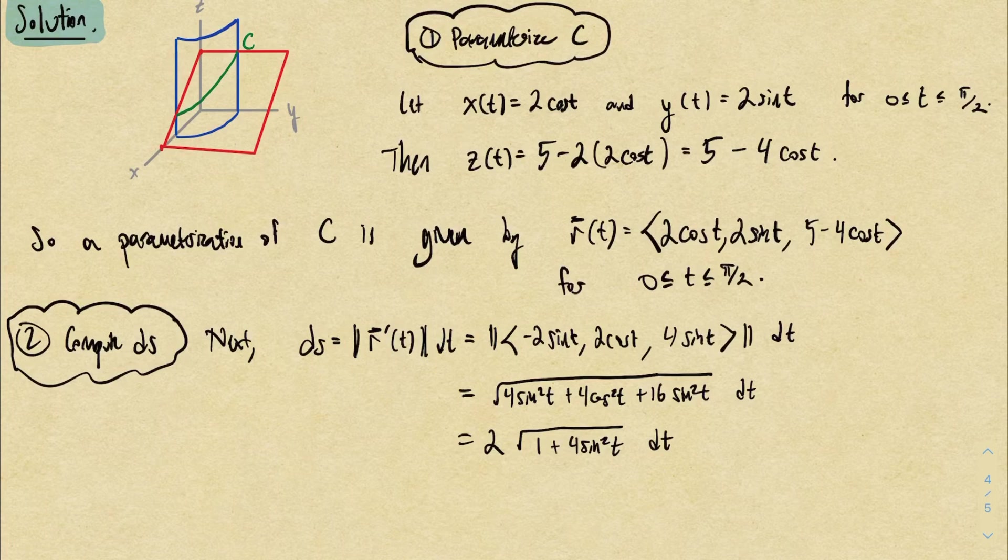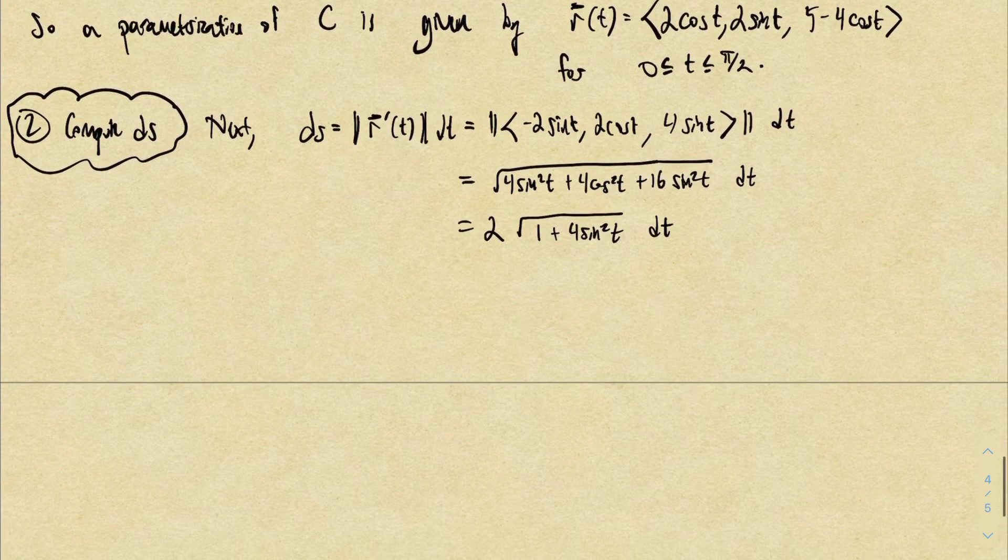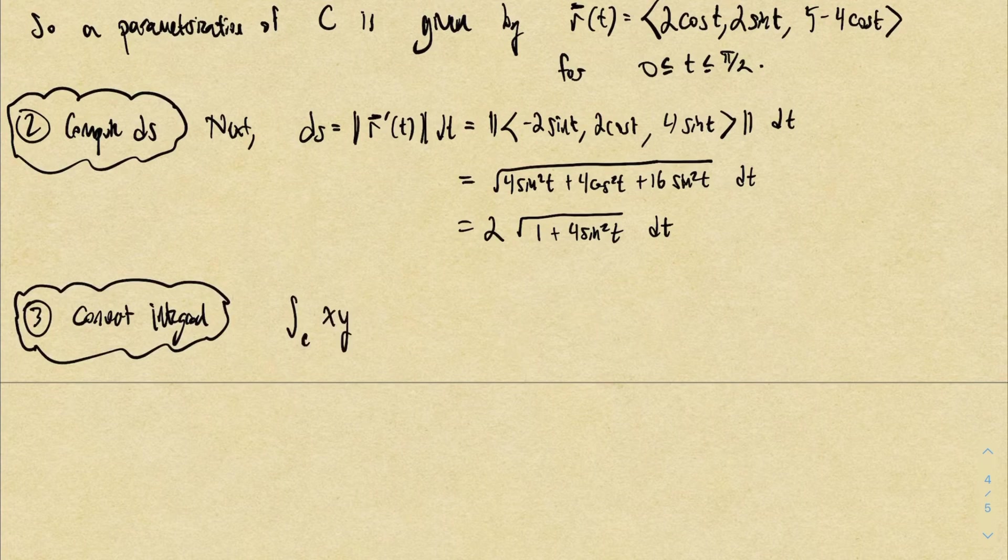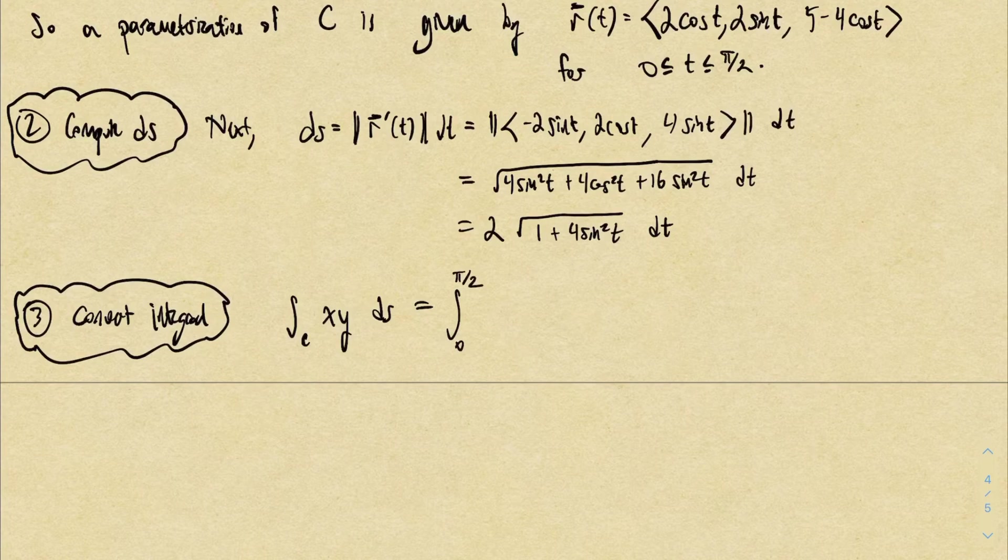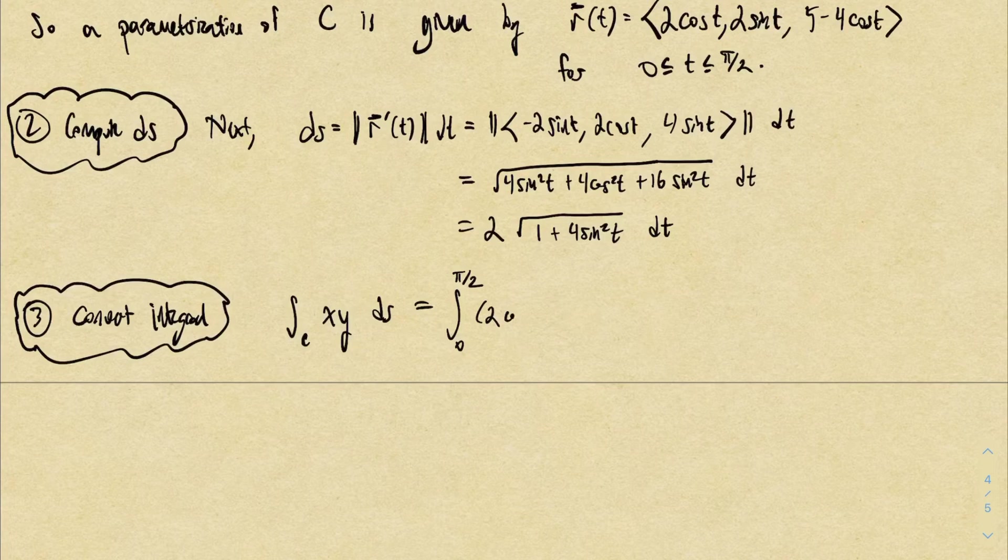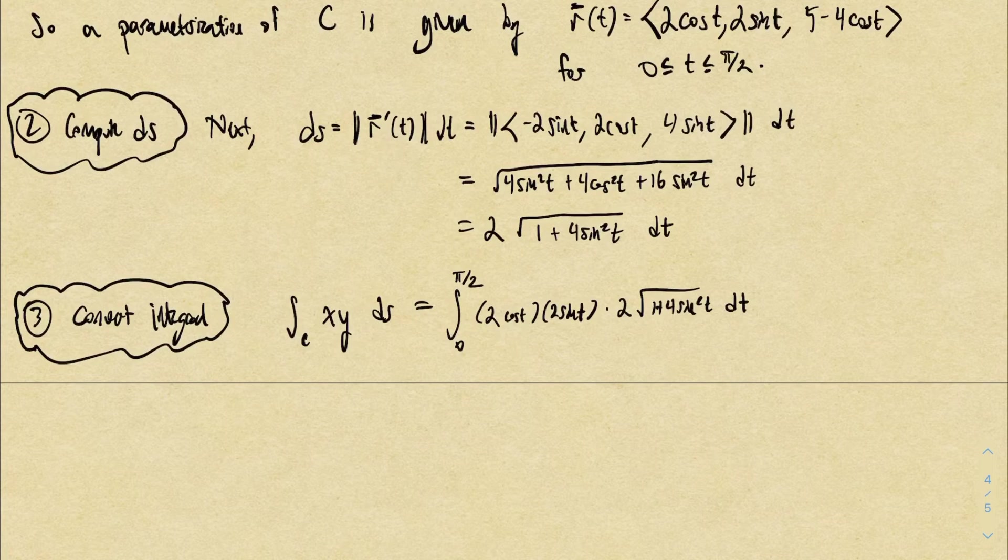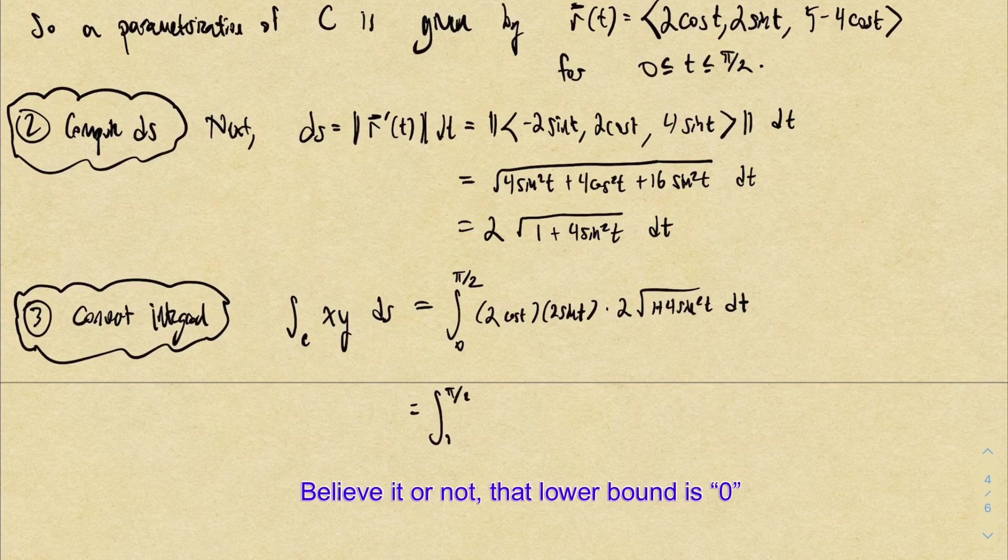There we go, we're ready for step 3, which is to just convert the integral we started with into a single variable integral. So the bounds correspond to the parameter bounds: that'll be 0 to pi over 2. The integrand is x times y. Well, x is 2 cosine t, y is 2 sine t, so x times y is going to be 2 cosine t times 2 sine t. Then DS we computed in step 2, so I'll just pop that expression in there. We have a regular single variable calculus integral to evaluate.